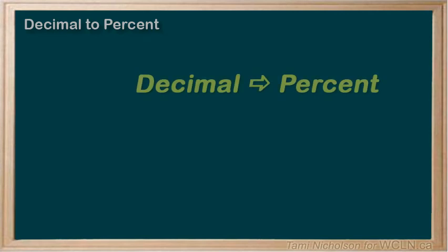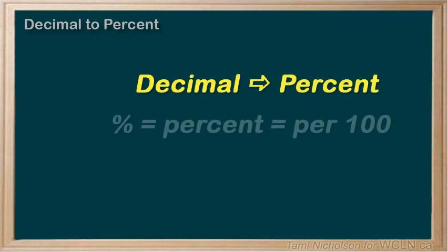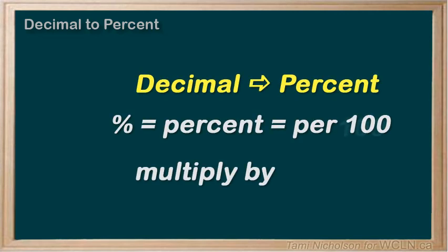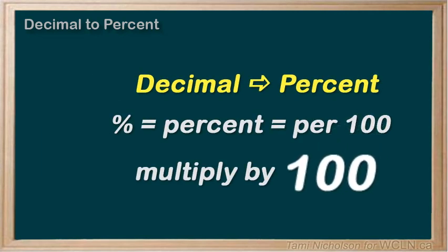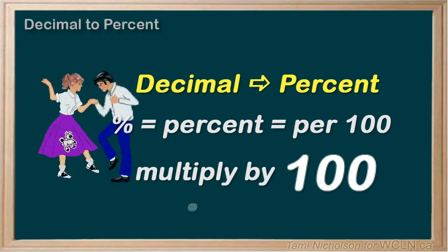Remember, to turn a decimal into a percent, you multiply by 100. Do the percent POCA and move the decimal point two spaces to the right.